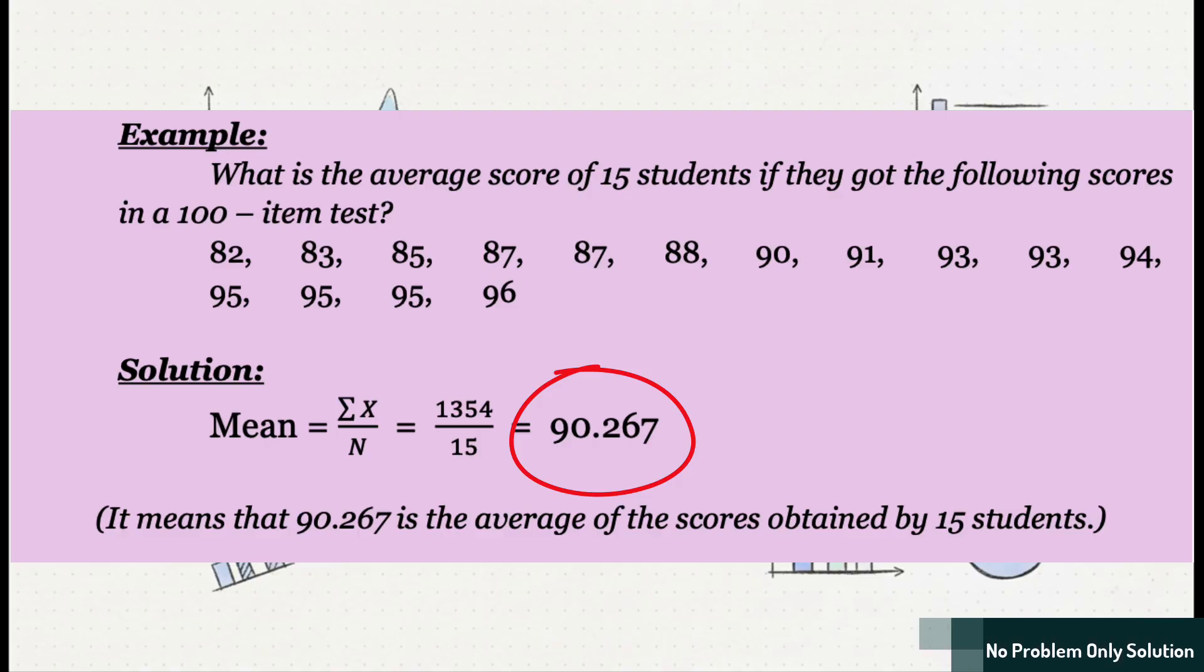So, that's it. That's our mean score for this group. This number gives us a really solid single value to represent the whole class. But, here's a question. Is it the only way to find a typical score? Not even close.